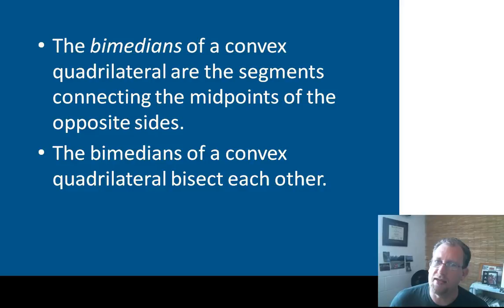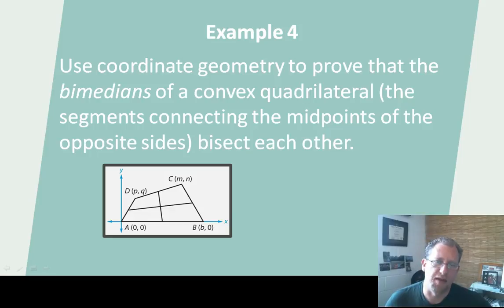Cool thing about bi-medians is that they bisect each other in any quadrilateral. Kind of cool. So it doesn't matter what the quadrilateral is. If you find the bi-medians, they bisect each other. It's kind of a neat property. And we'll be able to use that in a little bit here. Here's our last problem type that I want to give you a picture of before we move into the assignment.